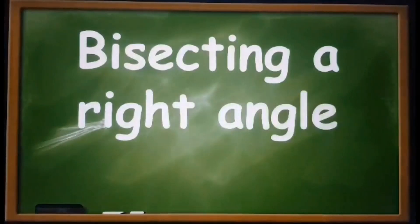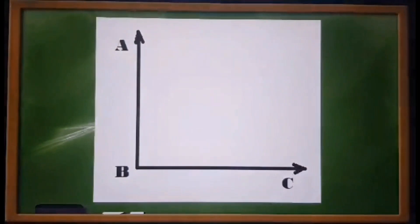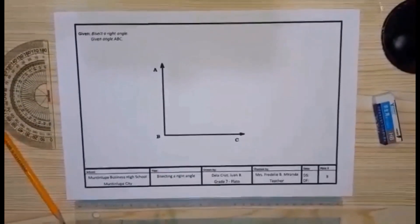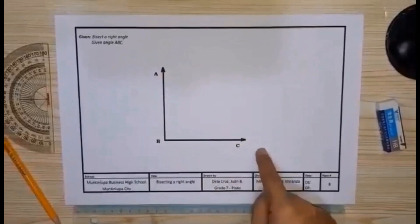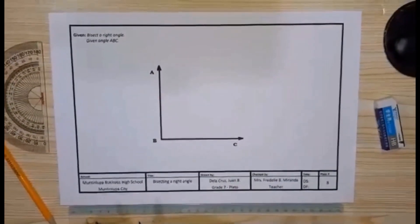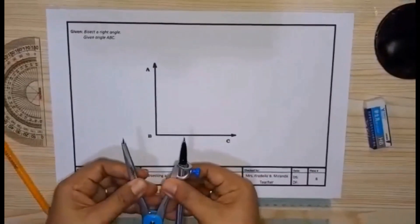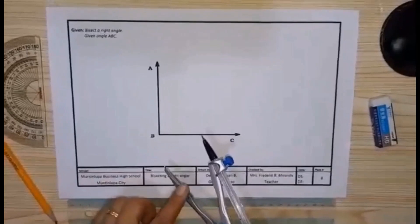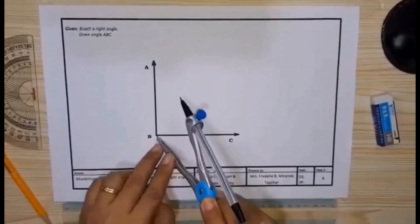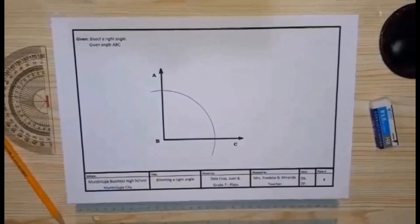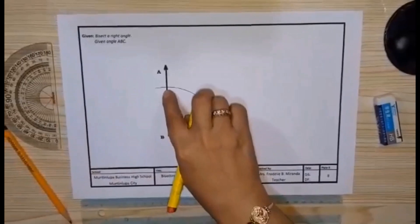This time try to solve this geometric problem: bisecting a right angle. The same procedure just we did in bisecting an acute angle. Steps in bisecting a right angle. Step one: at a given angle ABC, with B as a center, strike an arc in any convenient radius passing through the given angle. Set your compass at point B then strike an arc. Name the intersection point 1 and 2.